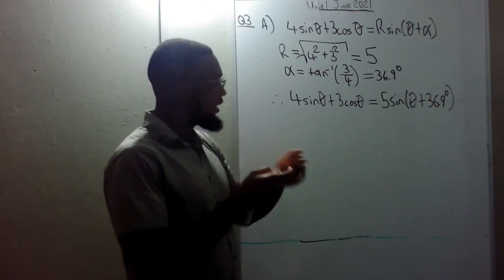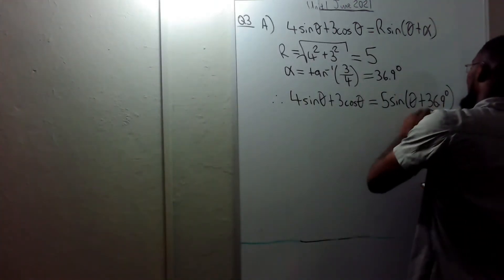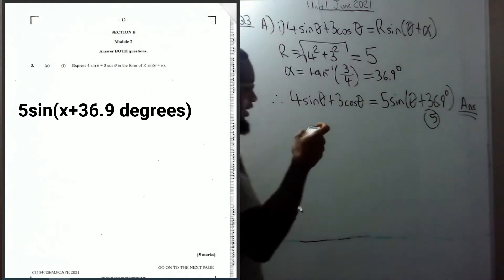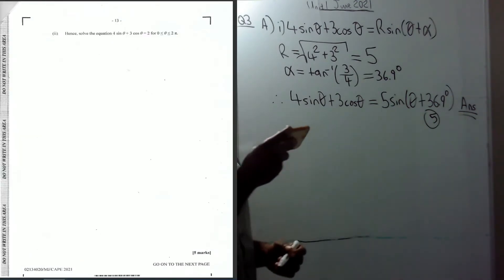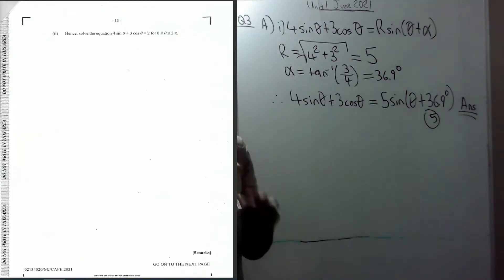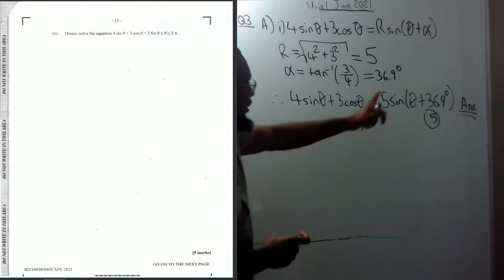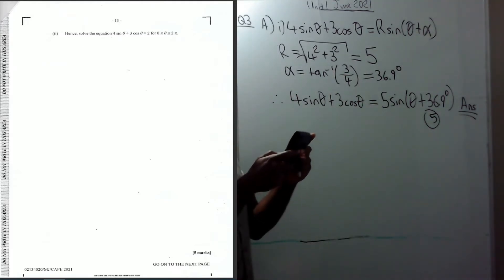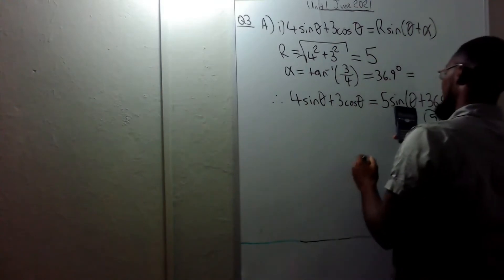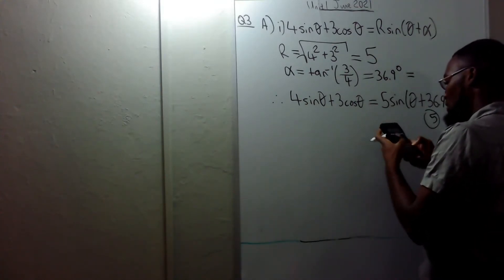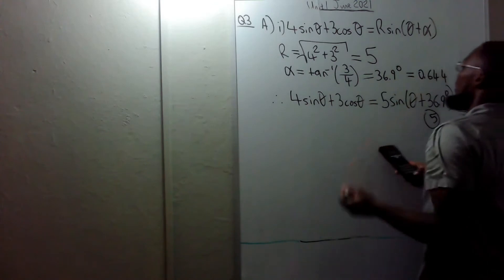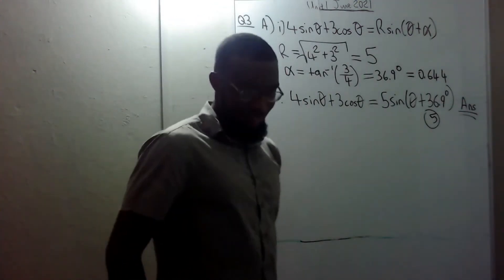The second part says 'hence solve 4sinθ + 3cosθ = 2'. But the next part is in radians, so it's better to put α in radians. tan⁻¹(3/4) = 0.644 radians, so we can rewrite the expression using 0.644 rad.